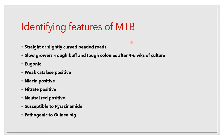Identifying features of MTB include straight or slightly curved beaded rods on smear. MTB are slow growers producing rough, buff, and tough colonies after 4 to 6 weeks. Growth is eugonic, meaning glycerol in culture media enhances growth. Biochemical tests show MTB as weak catalase positive, niacin positive, nitrate positive, and neutral red positive. MTB is susceptible to pyrazinamide and is pathogenic to guinea pigs.